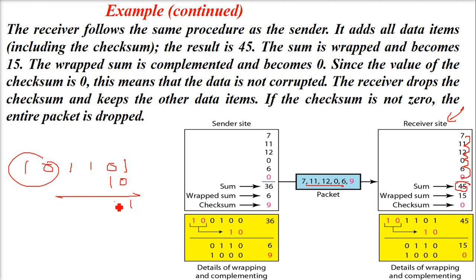Take this, put it here, and this becomes 1111. The other thing is the complement—this has to be complemented. It will be 0000. Now 0000 has been received by the receiver side, and this ensures that the data is correct. The wrapped sum, when complemented, becomes 0. Since the checksum is 0, the data is not corrupted. The receiver drops the checksum and keeps the other data.